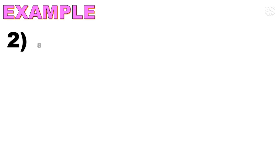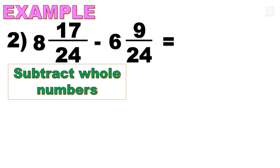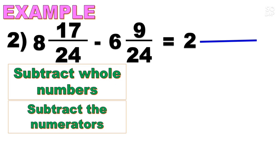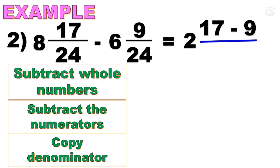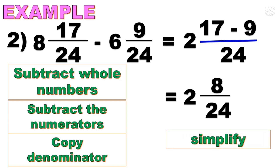Number 2 example: 8 and 17/24 minus 6 and 9/24. Observe the fractions — the proper fractions have the same denominator, which is 24. We subtract the whole numbers: 8 minus 6 is 2. Then subtract the numerators: 17 minus 9. Copy the common denominator, 24. Simplify: we now have 2 and 17−9 over 24, which is 2 and 8/24. Since 8 and 24 have a common factor, we need to simplify and find the lowest term.